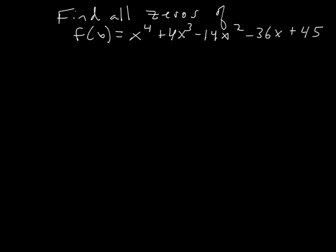Let's do one more example. Instead of a third power, this one is a fourth-power polynomial. It looks a little chaotic but we really have no way to start except listing all the rational zeros and trying them. The nice thing here is that the leading coefficient is 1, so all the rational zeros are just the factors of 45.